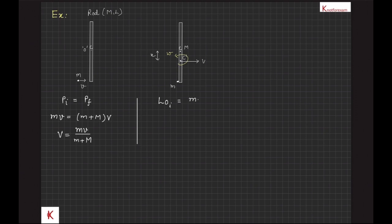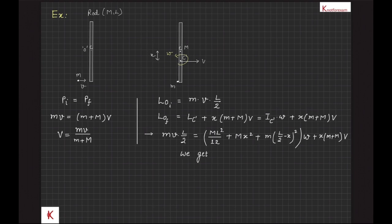Let center of mass of the system c dash is at a distance x from the center of the rod. Then x will be ml upon 2 m plus m. And initial angular momentum about O, LOI is equal to mv into l by 2. And final angular momentum about O is angular momentum about center of mass c dash of the system, that is ic dash omega plus angular momentum of the center of mass, that is x into m plus m into v. And by using angular momentum conservation, we can easily find omega.